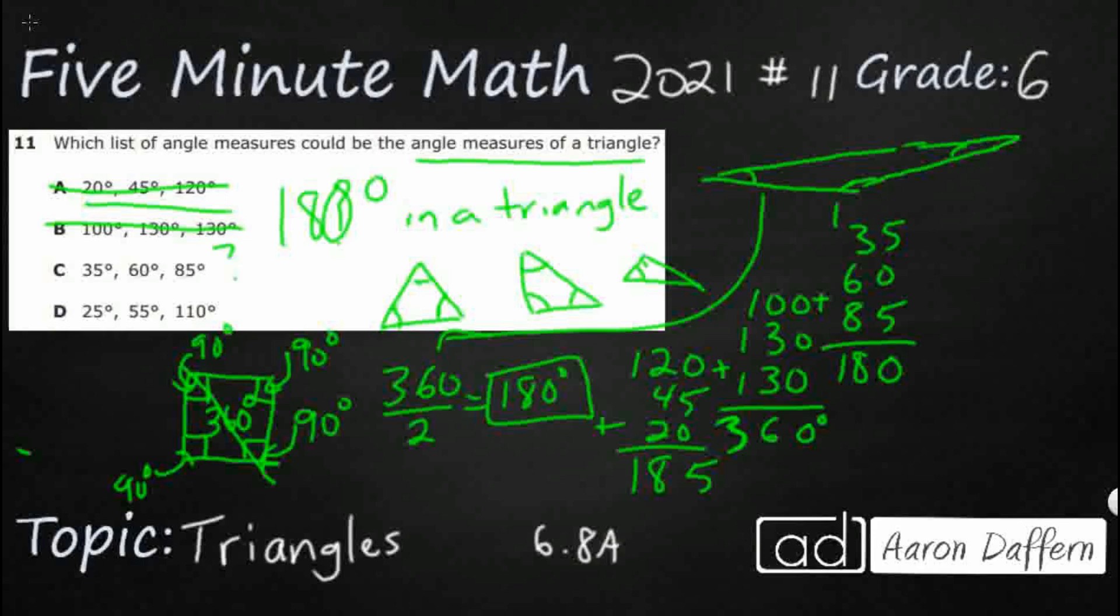Let's double check D. Make sure that's wrong. 25, 55, 110. And that's 10. Let's see. That is 190. Close, but does not meet the expectation. So the answer is C.